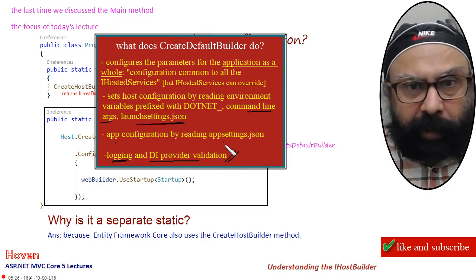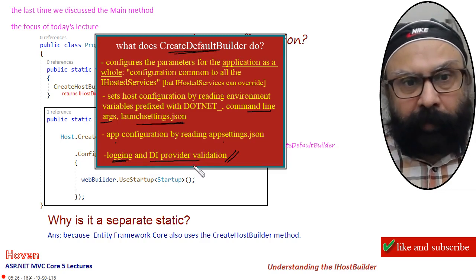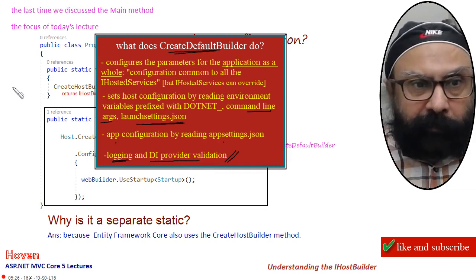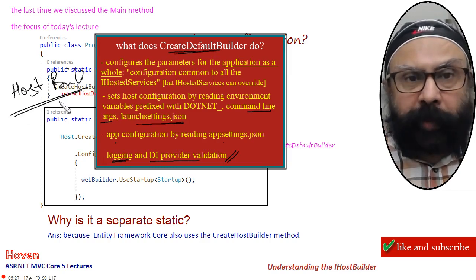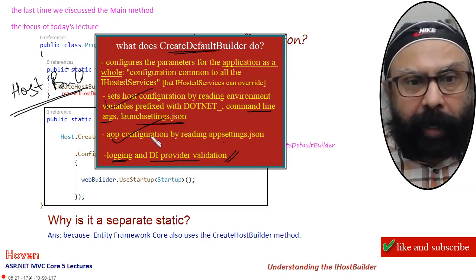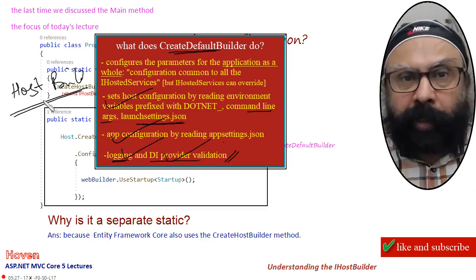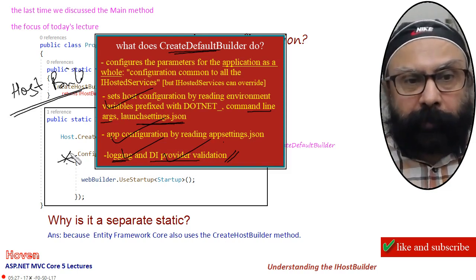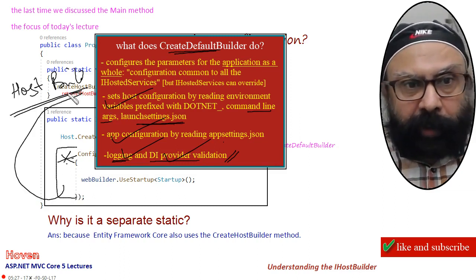If I sum up the whole story: createDefaultBuilder creates a HostBuilder, it will set host configuration, app configuration, logging, and DI provider. And this HostBuilder is next passed to the web configuration, where ASP.NET Core configuration occurs. And after that, the HostBuilder is returned to main.